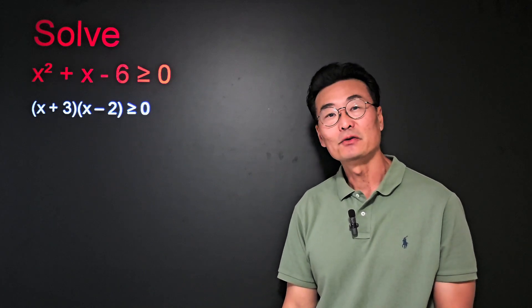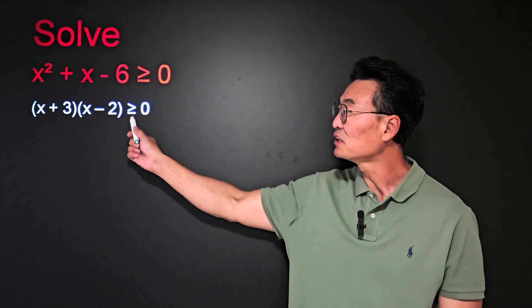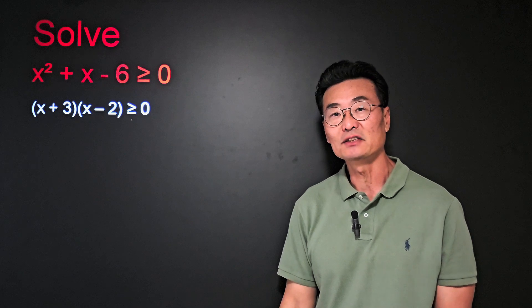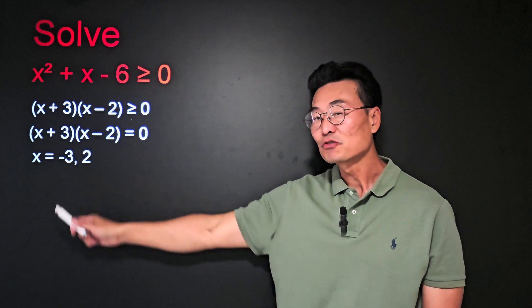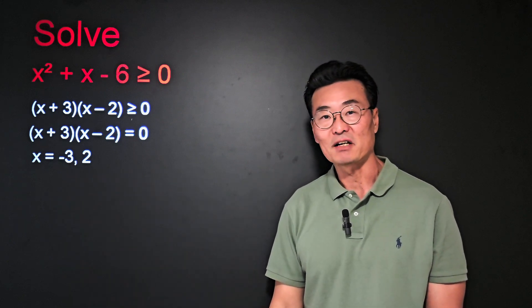And then, in order to find the x intercepts, what I'm going to do is change that greater than or equal sign into an equal sign, and then solve for x, where we get negative 3 and positive 2.